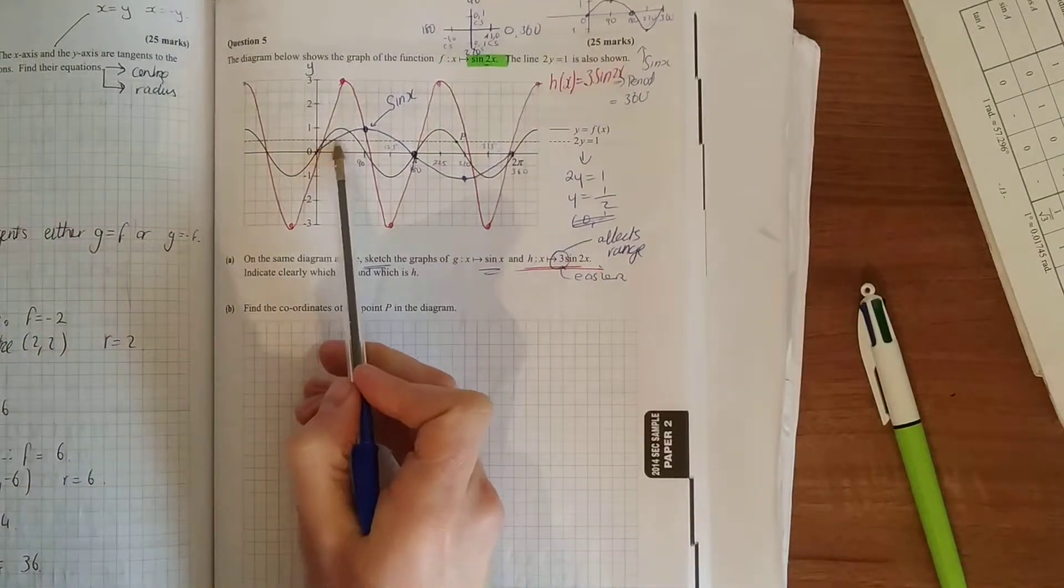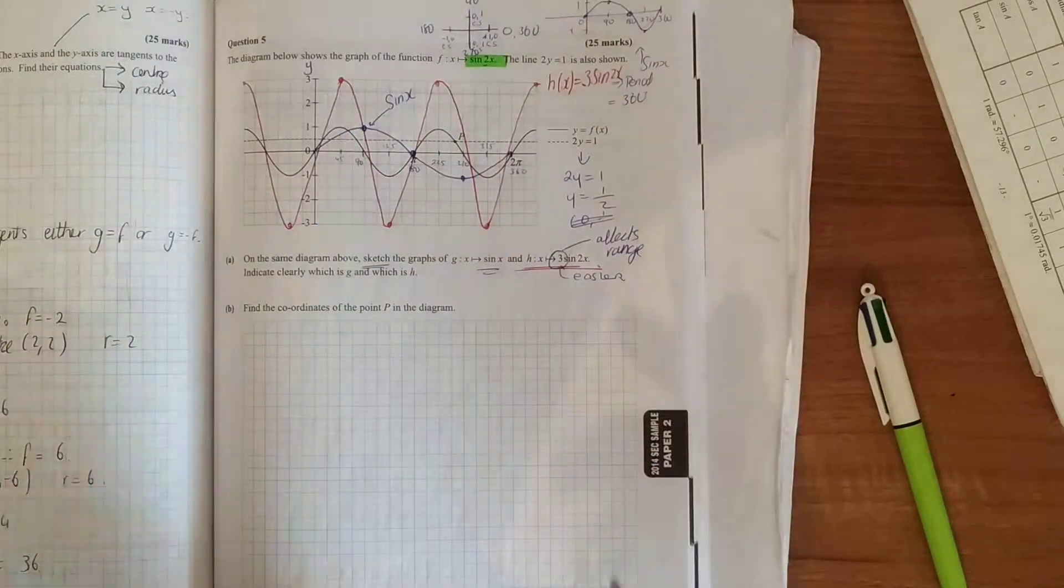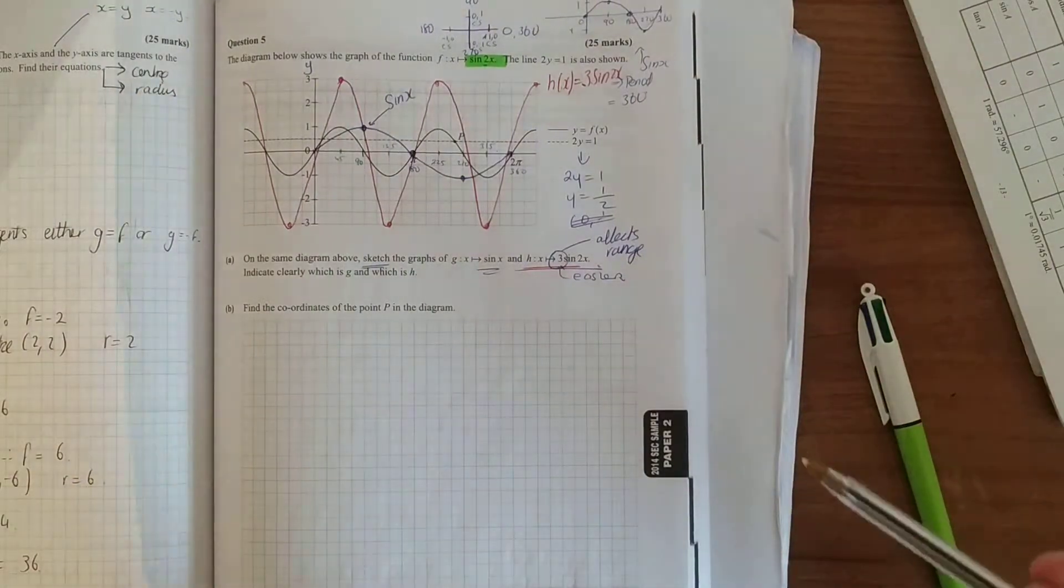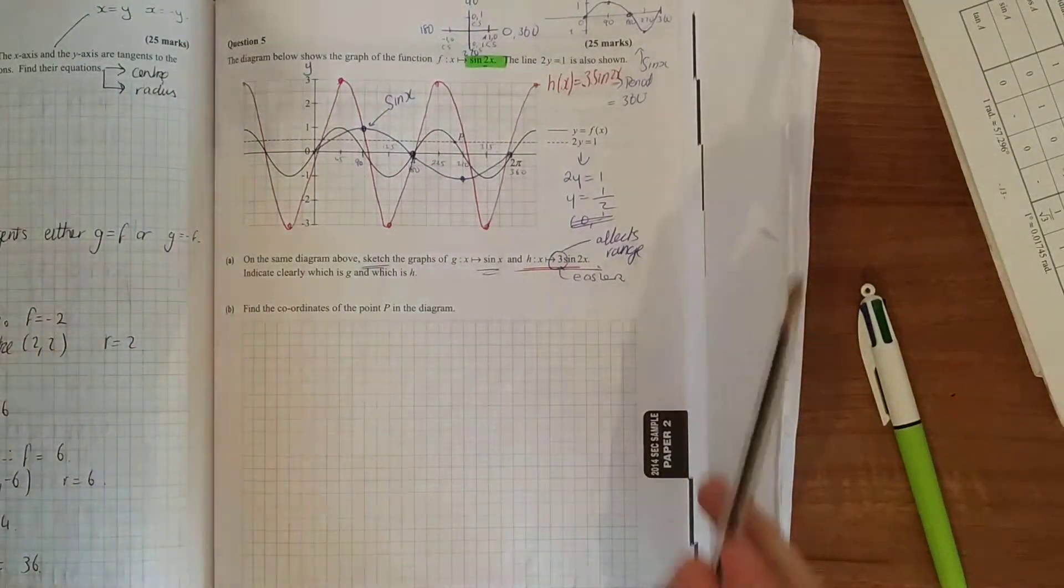You get your nice smooth curve. As you see, it's one, twice as slow, same height because there's no number in front, but your period hasn't been shortened.